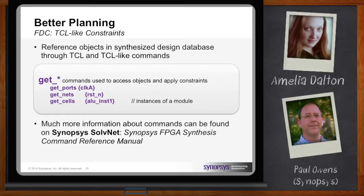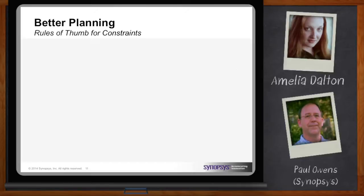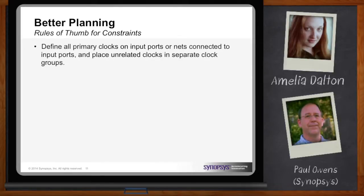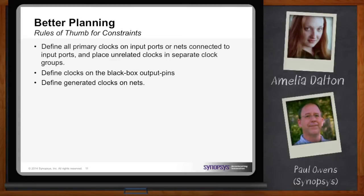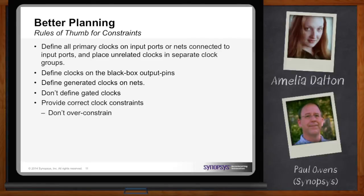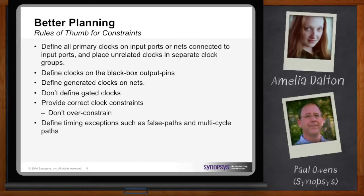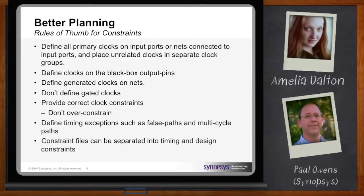Are there any general guidelines I should follow? The most important thing is defining all your primary clocks and all your input ports or nets connected to input ports. You want to define clocks on black box outputs, define generated clocks on nets, and not define gated clocks. Provide the correct clock constraints and don't over-constrain your design because the synthesis engine is timing-driven. Create timing exceptions for things like false paths and multi-cycle paths. A good technique is to separate your timing constraints from your design constraints — keep vendor-independent timing constraints in one file and vendor-specific constraints in another.